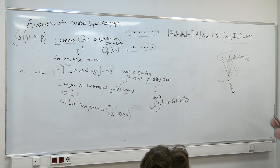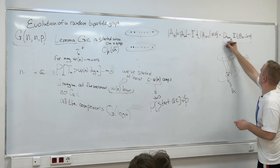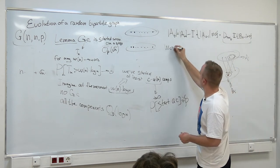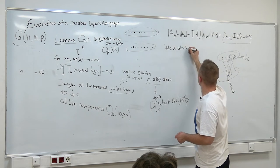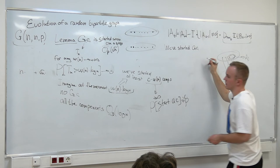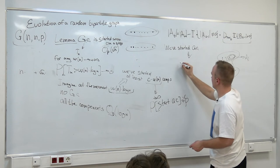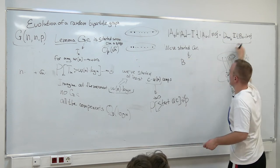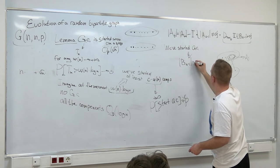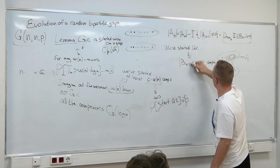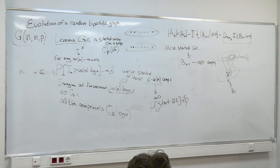The idea behind this: once we've started the giant component, then B_{T-1} is not empty, and we want to use the fact that only a small number of nodes were already processed.